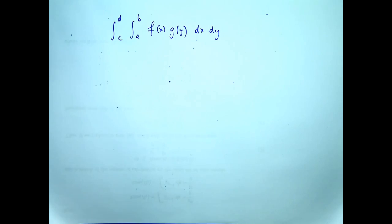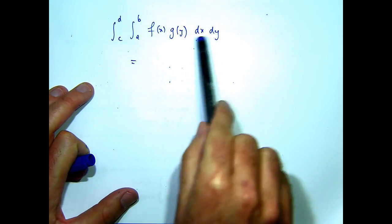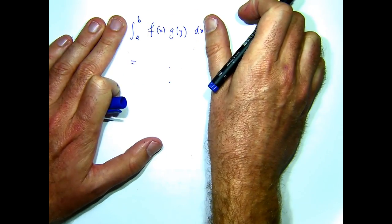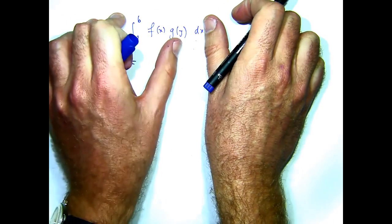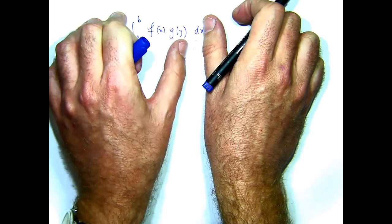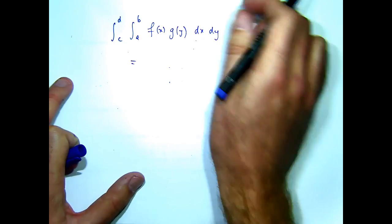But there's a faster way of doing it. Now in this context, think back to the inside integral. Now, if g of y is a constant, essentially, because we're assuming y is a constant, I can bring it out the front.